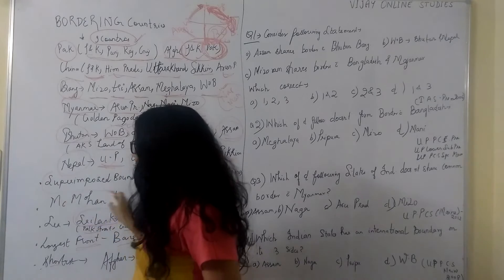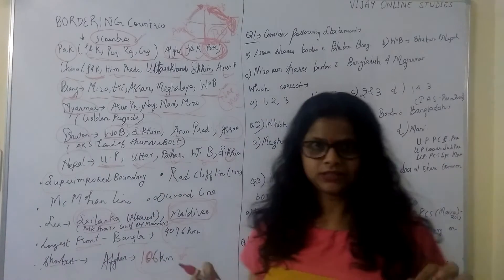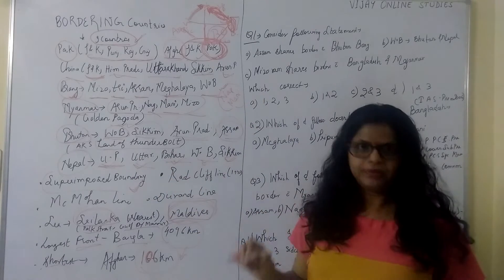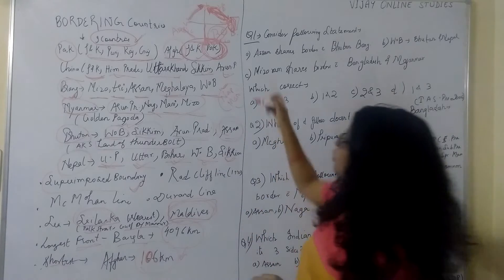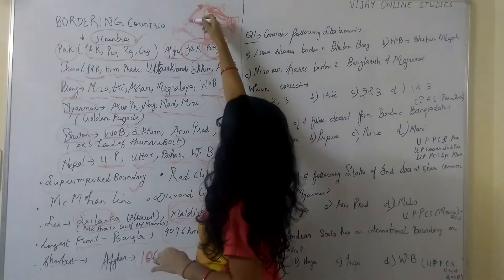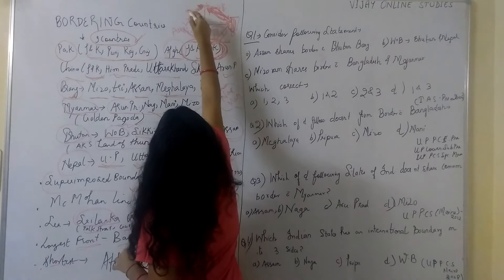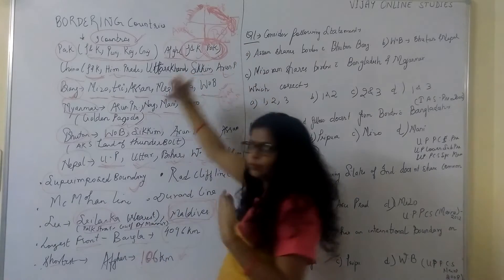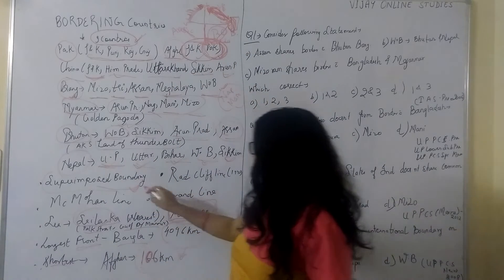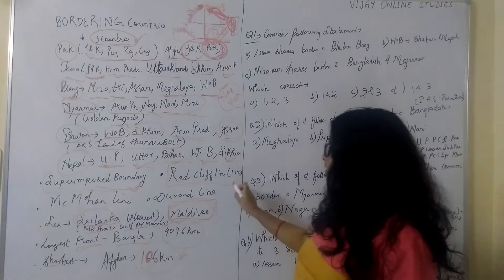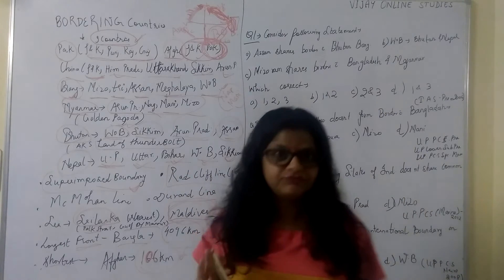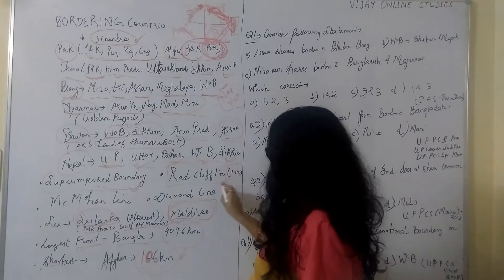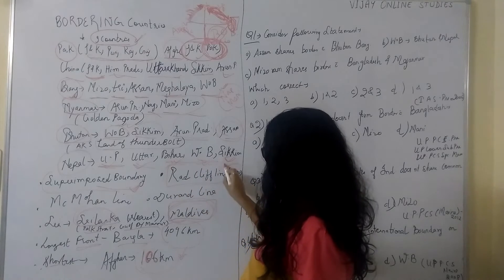Between India and Pakistan, the boundary is known as a superimposed boundary, because Pakistan has occupied some area of India. They always try to occupy some of the border area and have also occupied some. That's why it is called a superimposed boundary. This border between India and Pakistan is known as the Radcliffe Line. When the partition happened in 1947, our border was named the Radcliffe Line.